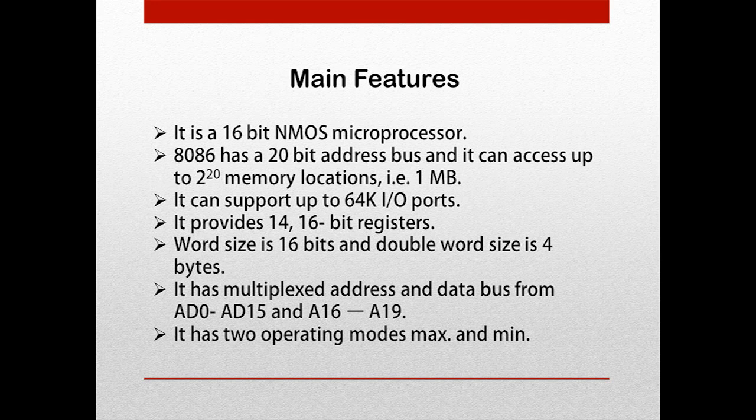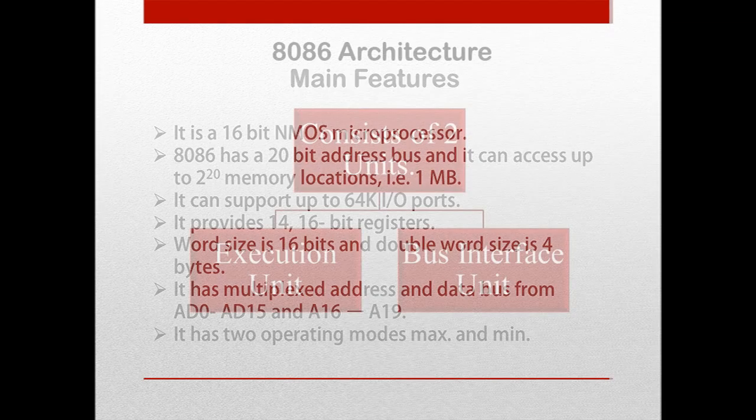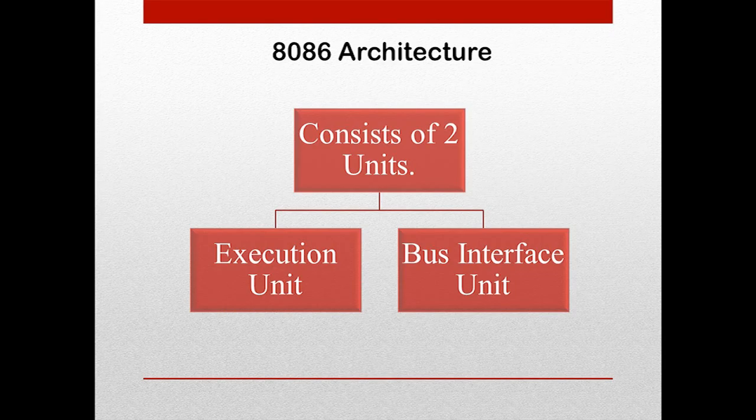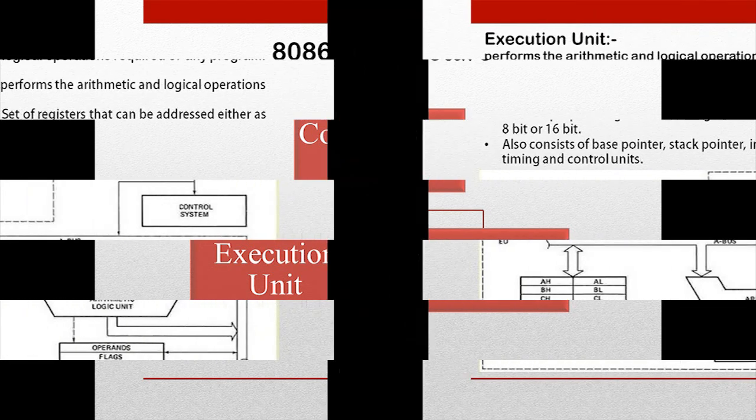The 8086 has two operating modes: MAX and MIN. It consists of two units: the Execution Unit and the Bus Interface Unit.